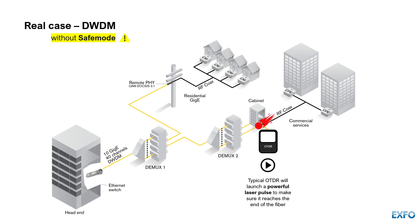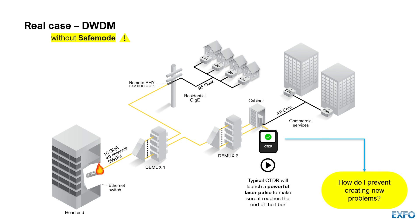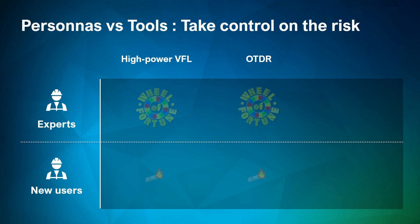Here's a real case scenario. Without safe mode, an OTDR will send out a pulse of light in auto mode at a very high level of energy. It can damage a transceiver if the power is sufficient enough, particularly in a DWDM system. And so that's what we're faced with today — how do we prevent these problems?